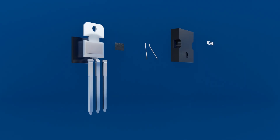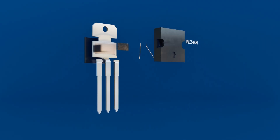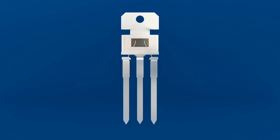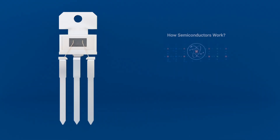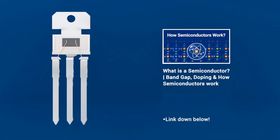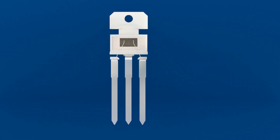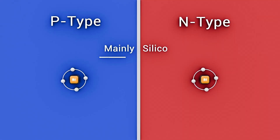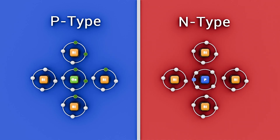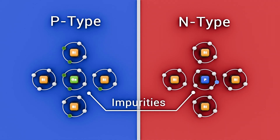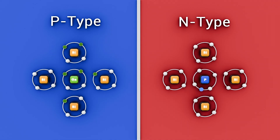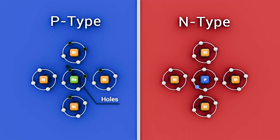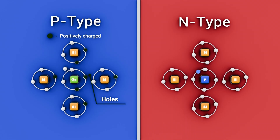To understand how MOSFETs work, we must first understand how PN junctions function. Check out our previous semiconductor video for more detail. Briefly, PN-type semiconductors are two regions of silicon doped with different impurities, because pure silicon has almost no free electrons. The P-side contains holes — positive charge carriers.